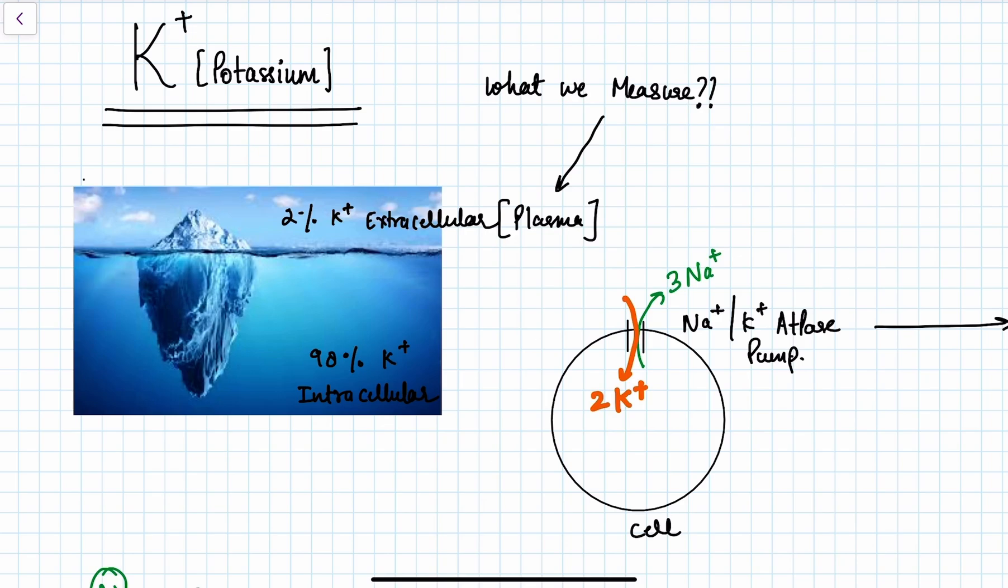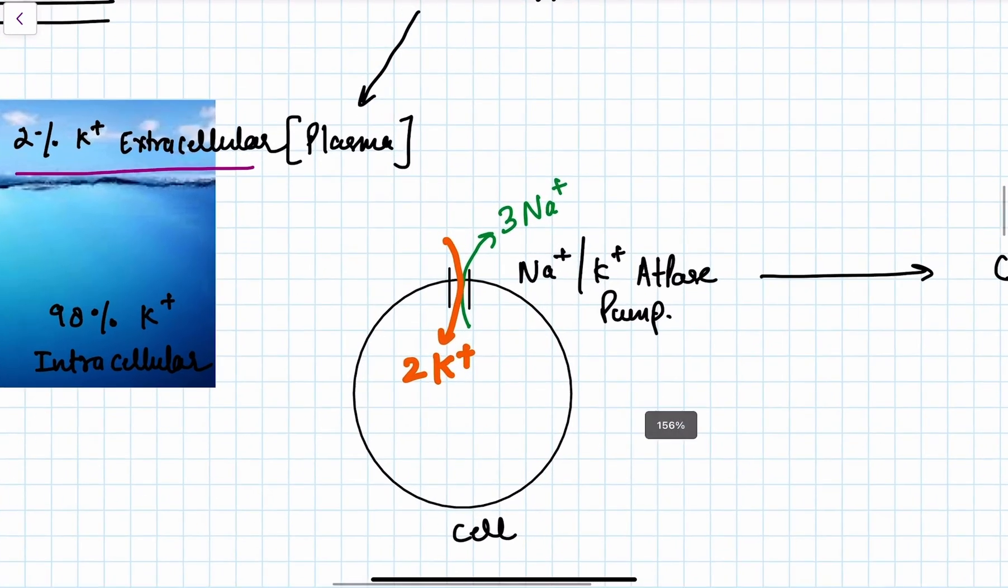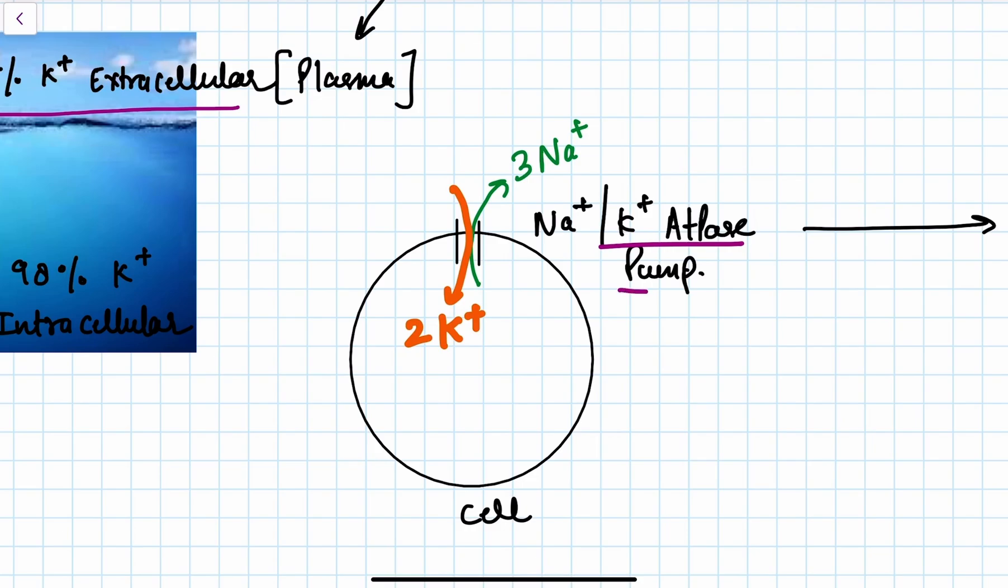We measure potassium in the serum, which represents only 2% of the entire total body potassium, because potassium is mainly in the intracellular space. Approximately 2% of potassium is in the extracellular space.